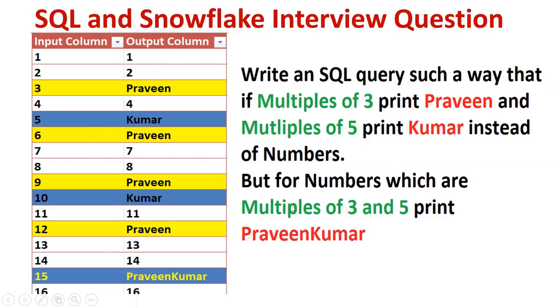One more condition I want to add: multiples of three and five. If 15 can be multiplied by three and 15 can be multiplied by five, then for 15 and 30, we need to put Ravind Kumar.